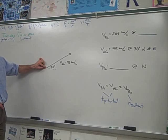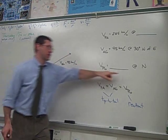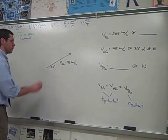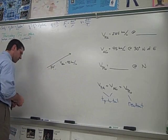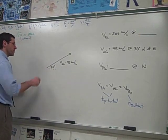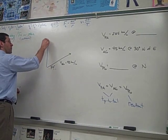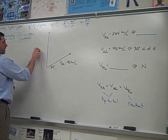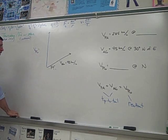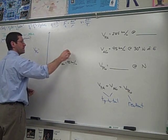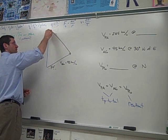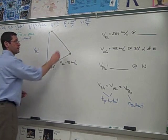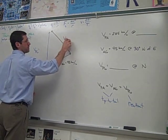It could go anywhere, but what we know is that after we draw it, the resultant, which will be drawn from this tail to the tip of the last vector, needs to go due north. Right, that's what this tells us. So basically we know that the resultant, maybe I'll draw the resultant here in blue, needs to go due north. And that's the velocity of the plane relative to the ground.